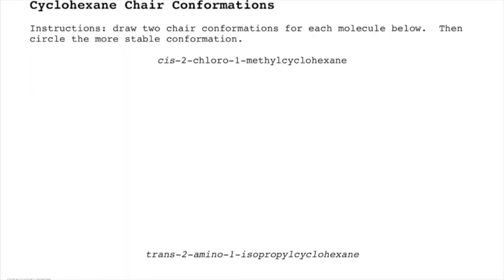Alright, let's look at how to solve cyclohexane chair conformation problems. In these problems, you're being asked to draw two chair conformations for each molecule below, and then circle the more stable conformation.